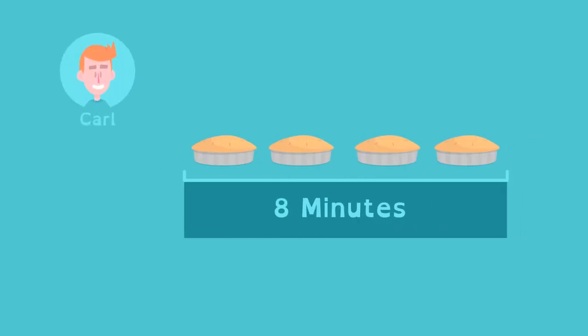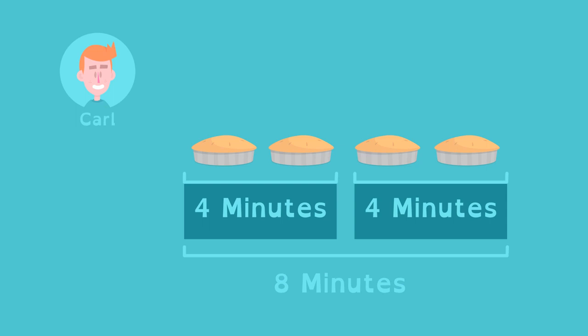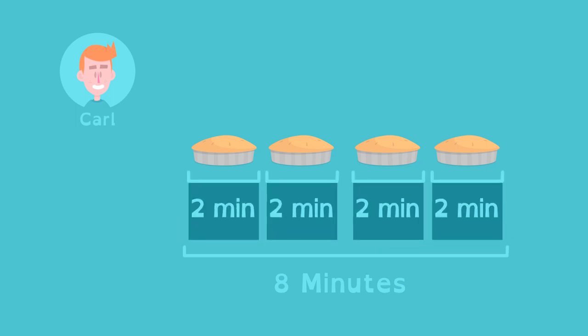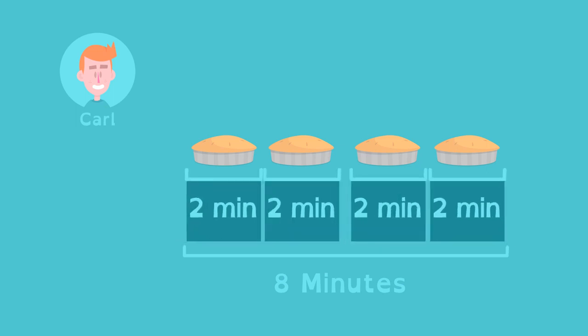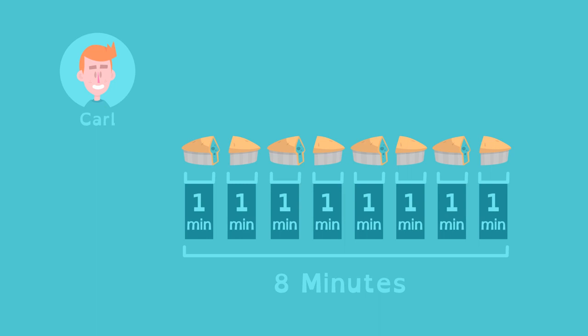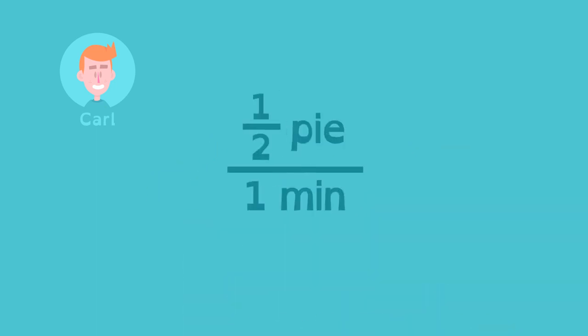If Carl eats four pies in eight minutes, then he can eat two pies in four minutes, one pie in two minutes, or half a pie in one minute. This is Carl's unit rate: the ratio of the number of pies and time in minutes.